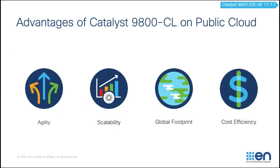There are many advantages for Catalyst 1900 CL on public cloud, including agility, scalability, global footprint, and cost efficiency. In the aspect of agility, it only takes a few minutes to spawn a Catalyst 1900 CL instance in Azure, making it easy to quickly launch one or more wireless controllers and terminate when done.